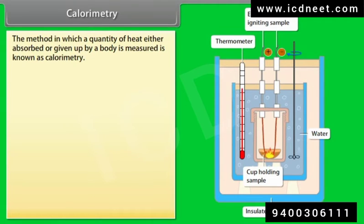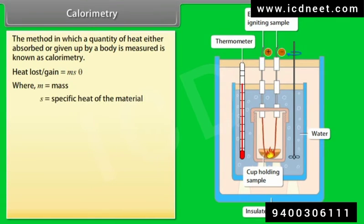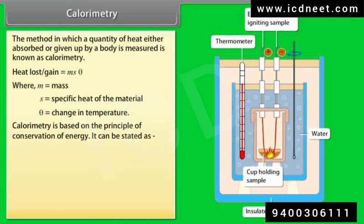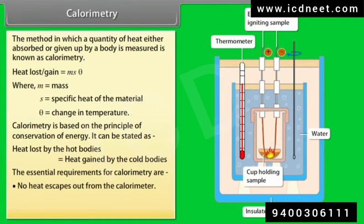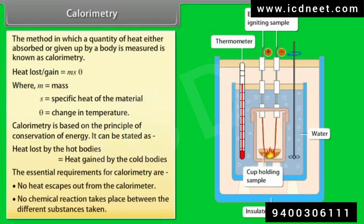The heat formula is H equals MS theta, where M is mass, S is specific heat of the material, and theta is the change in temperature. Calorimetry: A calorimeter is based on the principle of conservation of energy. It states that heat lost by hot bodies is equal to heat gained by cold bodies. Essential requirements are that no heat escapes from the calorimeter and no chemical reactions take place between the different substances.